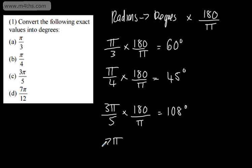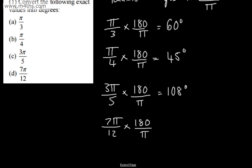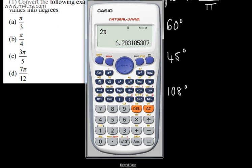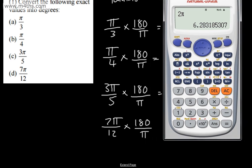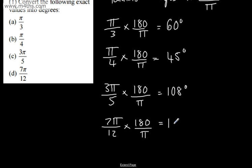Then 7π/12: we multiply that by 180 over π, the π's cancel, and 7 over 12 times 180 gives us 105 degrees. So we're simply converting to degrees from radians.